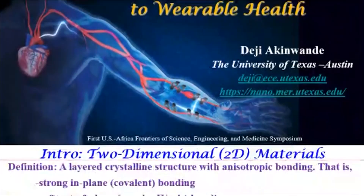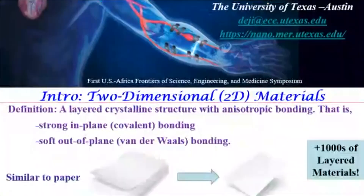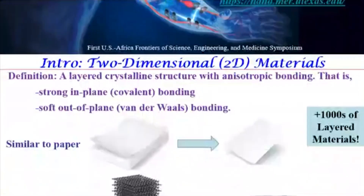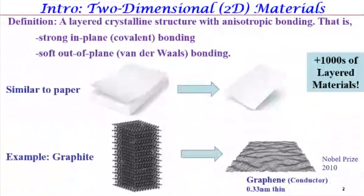I work in the class of materials known as two-dimensional materials — atomically thin materials. The most popular of this family is the graphite system, which is the atomic equivalent of a stack of paper. Just like you can peel one sheet from a stack, you can peel a layer of carbon atoms from the graphite system — carbon atoms arranged in a hexagonal fashion. That layer is what is known as graphene.